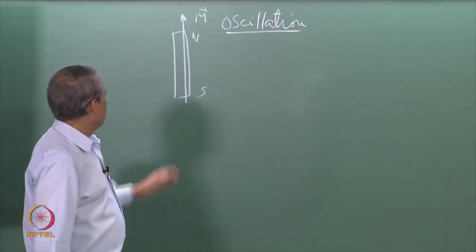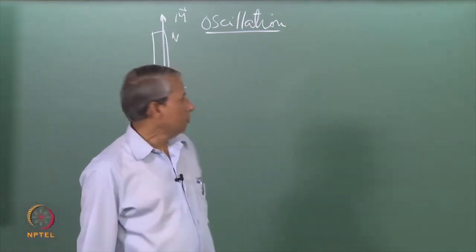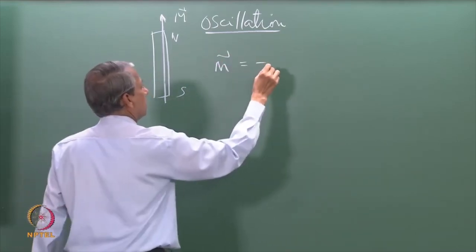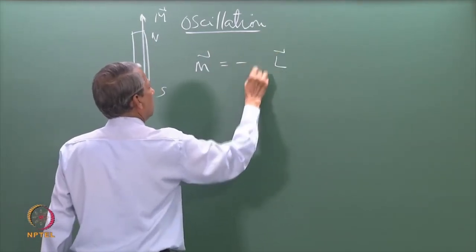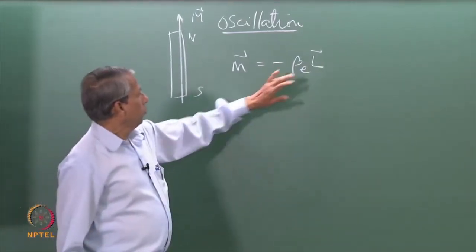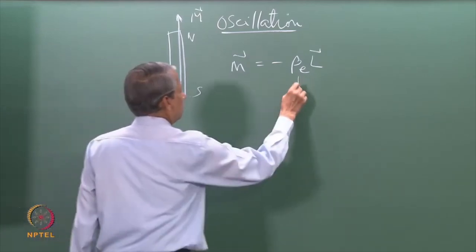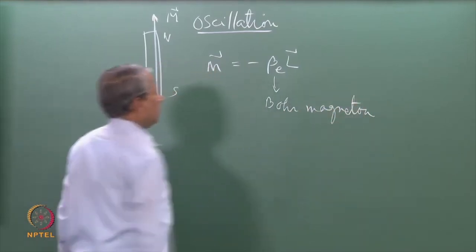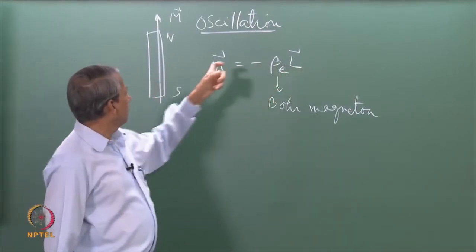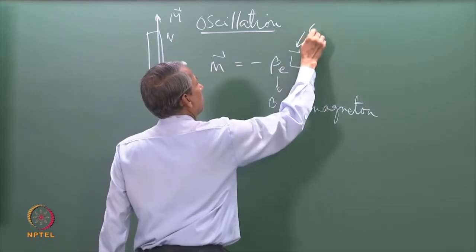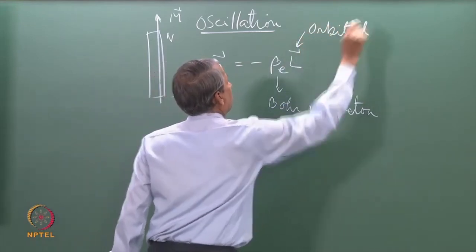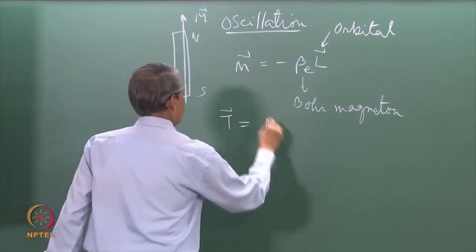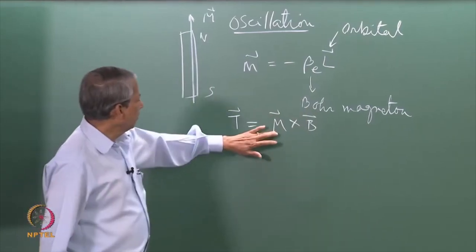We also saw that if the magnetic moment arises from its angular momentum, then we could relate the magnetic moment m to the angular momentum vector times the Bohr magneton in the case of an electron. Specifically, we related this orbital angular momentum to the magnetic moment. That should be kept in mind. And why does it undergo this to and fro motion? Because it experiences a torque. Torque is equal to the vector product of the magnetic moment and the magnetic field.